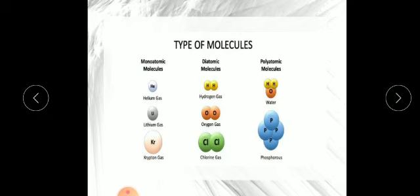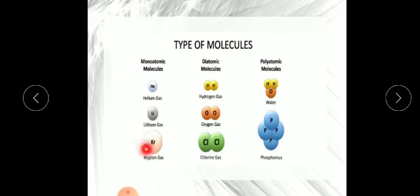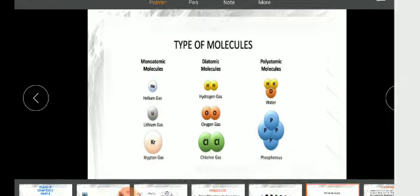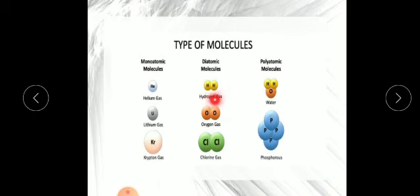Based on the number of atoms, molecules can be monoatomic, diatomic, or polyatomic. Mono means 1 — helium, lithium and krypton, which are noble gases, are monoatomic, meaning they do not combine and have an atomicity of 1. Di means 2 — hydrogen, oxygen, chlorine, fluorine, bromine and iodine are all diatomic, made up of 2 atoms of the same kind.